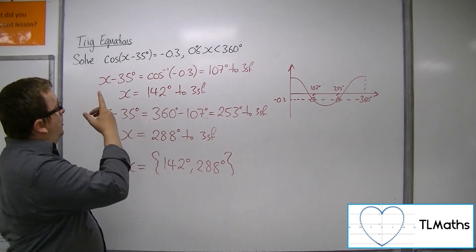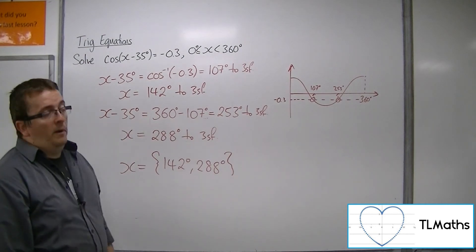So these are the two solutions to cos(x - 35°) = -0.3.